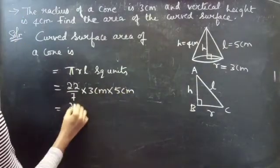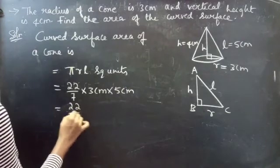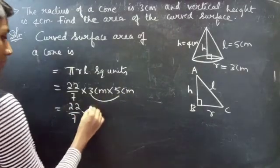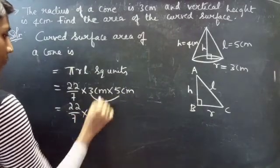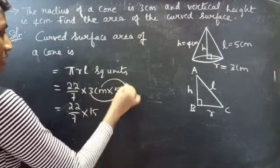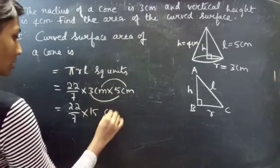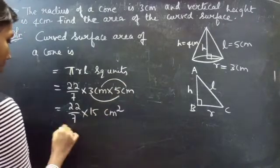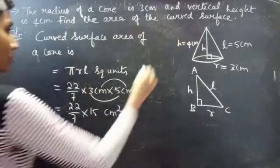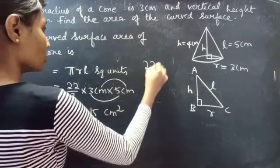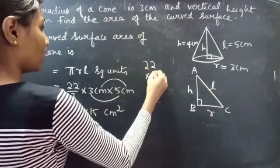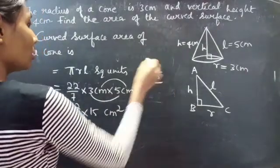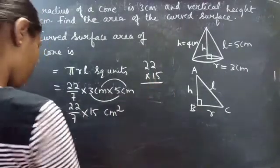Multiplying 22 and 15 gives 330. So we have 330 by 7 centimeters square.